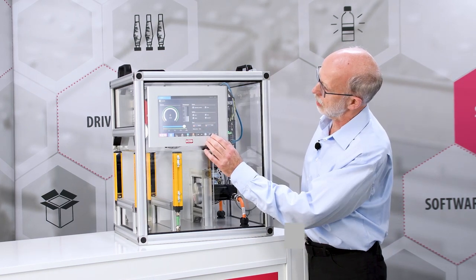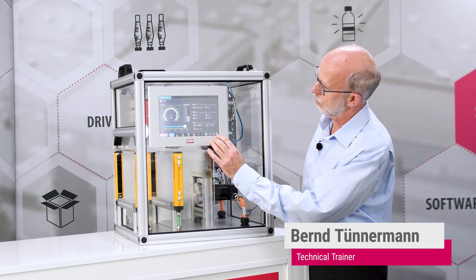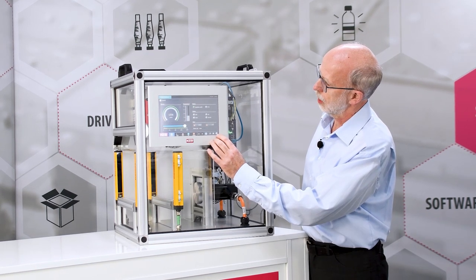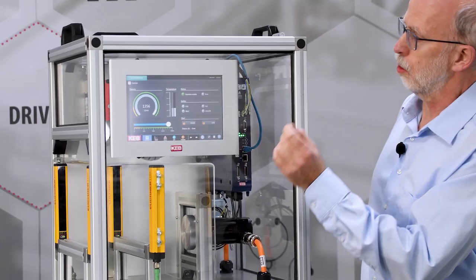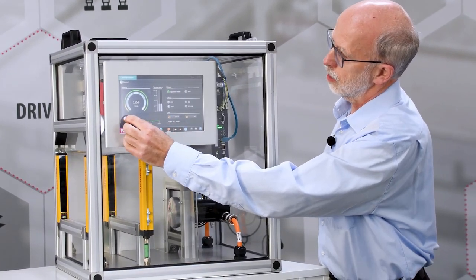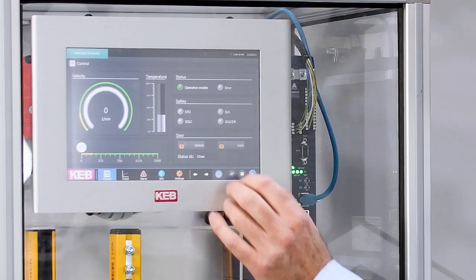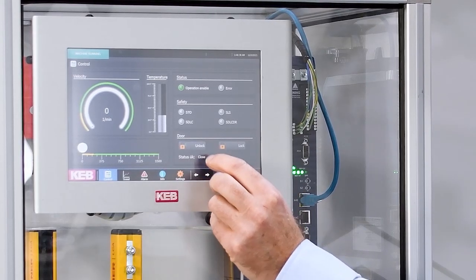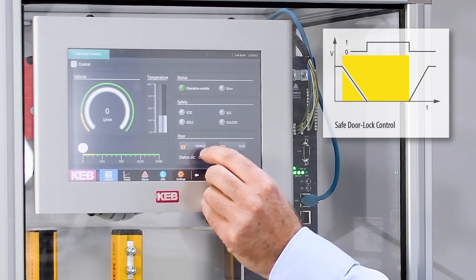For example, we start the machine again. And now when we want to open the door, we can put down the speed to zero, stand still, and then we have here an activator for the SDLC function.